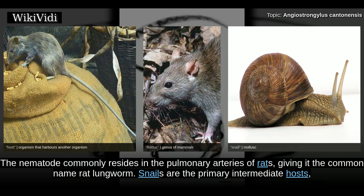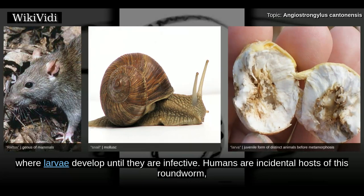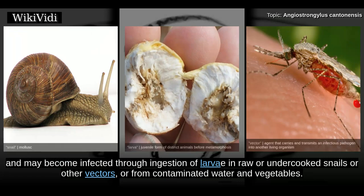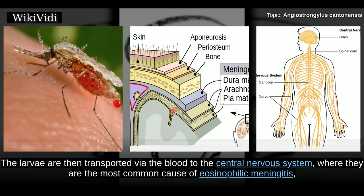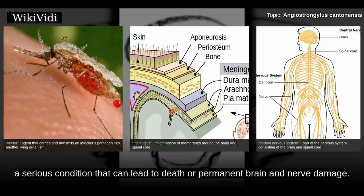Snails are the primary intermediate hosts, where larvae develop until they are infective. Humans are incidental hosts of this roundworm and may become infected through ingestion of larvae in raw or undercooked snails or other vectors, or from contaminated water and vegetables. The larvae are then transported via the blood to the central nervous system, where they are the most common cause of eosinophilic meningitis, a serious condition that can lead to death or permanent brain and nerve damage.